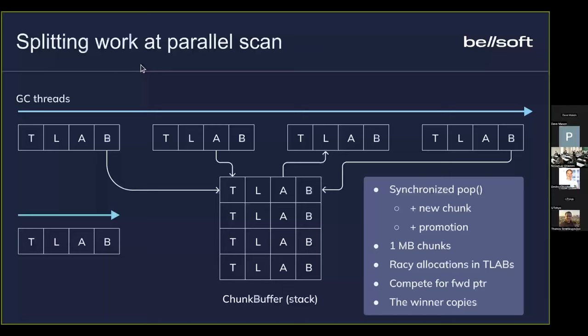When a thread does scanning and the current one-megabyte chunk is not sufficient, it starts processing a new chunk and can put the old one into a shared buffer — a shared stack — where other workers can pop such a chunk and continue their own processing. After some point, all workers are out of work and the parallel processing ends.